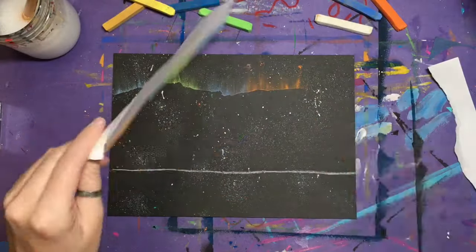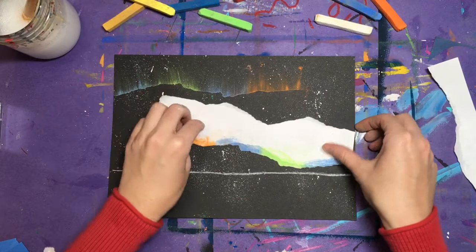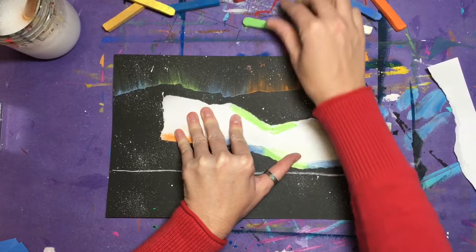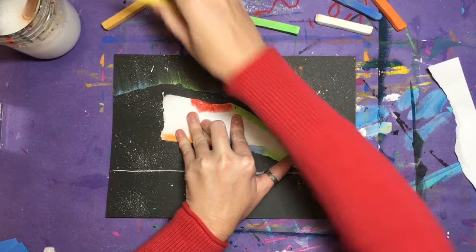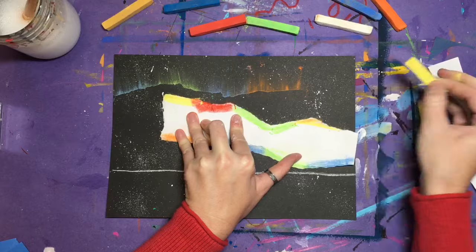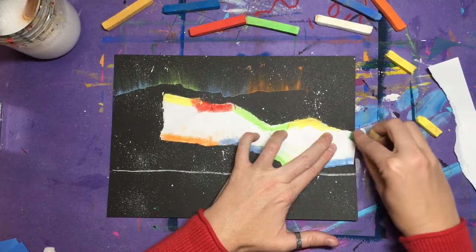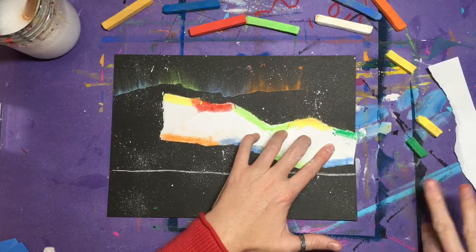To add more lights to your picture, tear another edge off of your scrap paper, choose your chalks again, and rub them along the edge of that new line that you've torn. If your finger is dirty, wipe it off on your messy mat, and then brush that chalk up onto the black paper to create another set of northern lights.